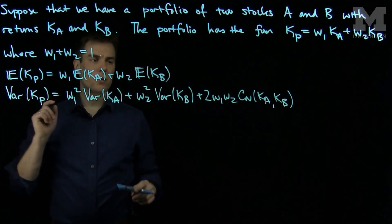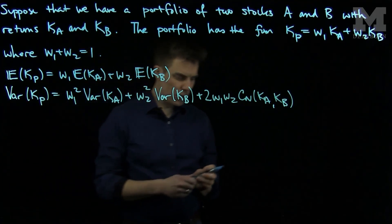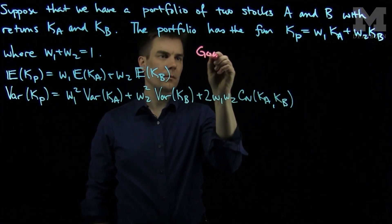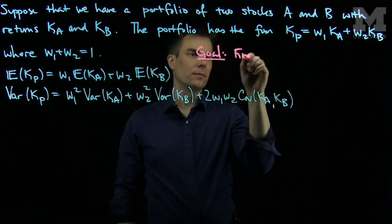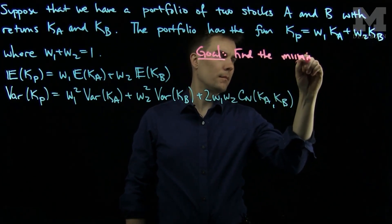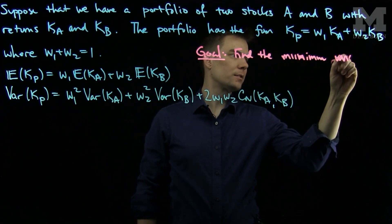And so to find the risk, I'll take the square root of this expression. So my goal is to find the minimum variance portfolio.